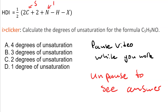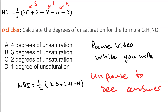So the number of carbons is 5, we have no nitrogens, no halogens, and the number of hydrogens is 9. This means our HDI is one-half of: 2 times 5, plus 2, minus 9. So 2 times 5 is 10, plus 2 is 12, minus 9 is 3. One-half of 3... the answer is 2 degrees of unsaturation.